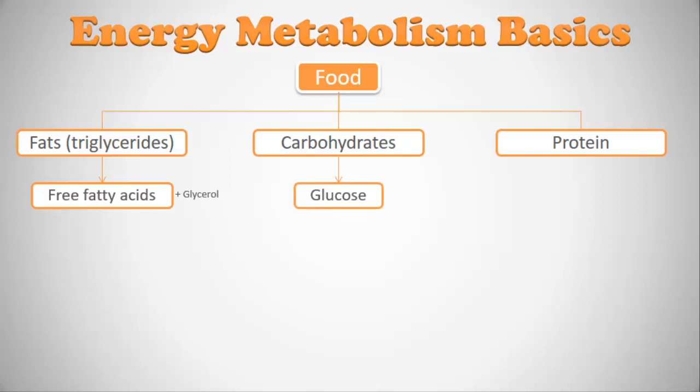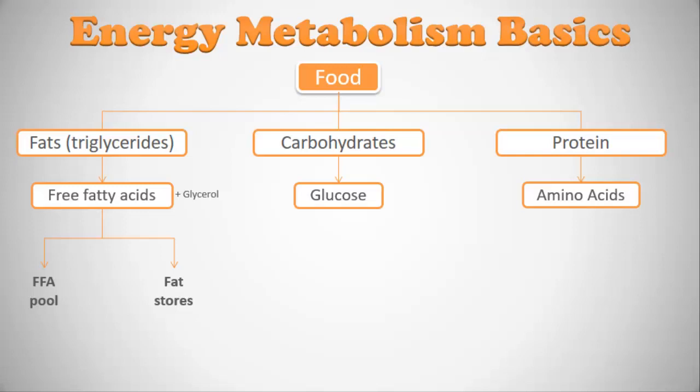When you eat carbohydrates, they're broken down in your stomach and ultimately converted into glucose. Similarly, protein is broken down into amino acids. When fats are broken down into free fatty acids, those free fatty acids move into your blood. Some stay in the free fatty acid pool, and if you have a whole lot of free fatty acids in the pool, some will be stored as fat.